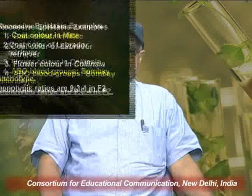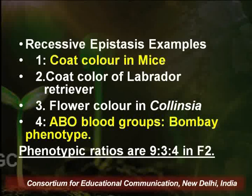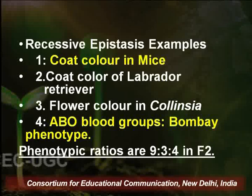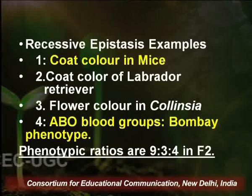There are some very interesting examples of recessive epistasis we are going to discuss. The first is coat colour in mice, which is the most common. This will be followed by coat colour in Labrador retrievers, then flower colour in Collinsia — the blue-eyed mary — and finally the very interesting ABO blood groups and the Bombay phenotype, which we have also discussed during our coverage of multiple alleles.